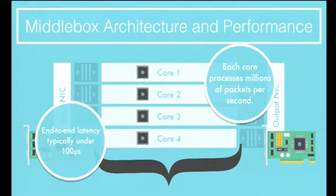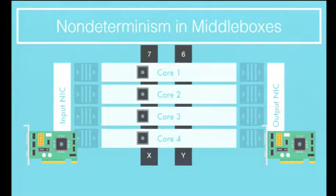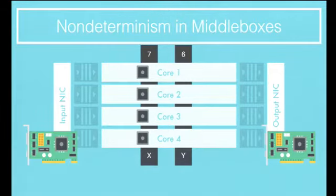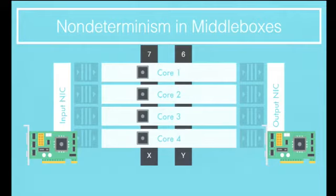There is one place where this perfect parallelism breaks down: shared state. Middleboxes keep state about active connections. Here we have two variables x and y, which may represent some aggregate behavior about a collection of users or flows. Because lots of different cores have to access this data, it's shared between cores. Middlebox architects try to get rid of this shared state as much as possible — it's very expensive to share data between different cores — but inevitably some of it sticks around, and that's where parallelism breaks down.